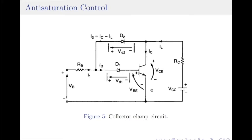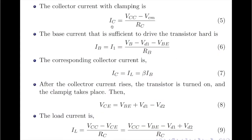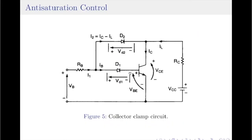In the Baker's clamp circuit, the collector-to-emitter voltage is clamped to a predetermined level and the collector current is given by applying KVL to the collector-emitter loop, which is given by the equation IC = (VCC − VCM) / RC, where VCM is the clamping voltage and VCM should be greater than VCE saturation. The base current IB, which is sufficient enough to drive the transistor into hard saturation, can be obtained by applying KVL to the base-emitter loop.